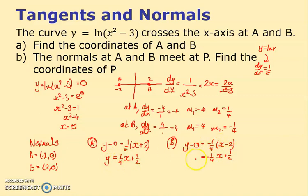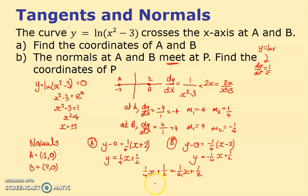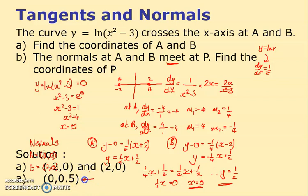When do the two normals meet? Set them equal: (1/4)x + 1/2 = (-1/4)x + 1/2. This gives (1/2)x = 0, so x = 0. Substituting back: y = (1/4)(0) + 1/2 = 1/2. So the two normals meet at the point (0, 1/2).